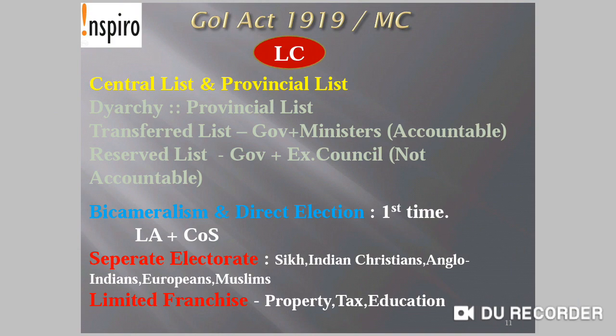Government of India Act 1919, also known as the Montagu-Chelmsford Act. Legislature-related provisions: the list of subjects was divided into two — the Central List and the Provincial List. The Central List covered subjects on which the center could legislate; the Provincial List covered subjects on which provinces could legislate. Under the Provincial List, a Diarchy system was included — meaning the provincial list was again classified into two: the Transferred List and the Reserved List. Under the Transferred List, the Governor was accountable to the legislature and had to follow ministerial advice. Under the Reserved List, the Governor could take decisions in consultation with the Executive Council and was not accountable to the Legislative Council.